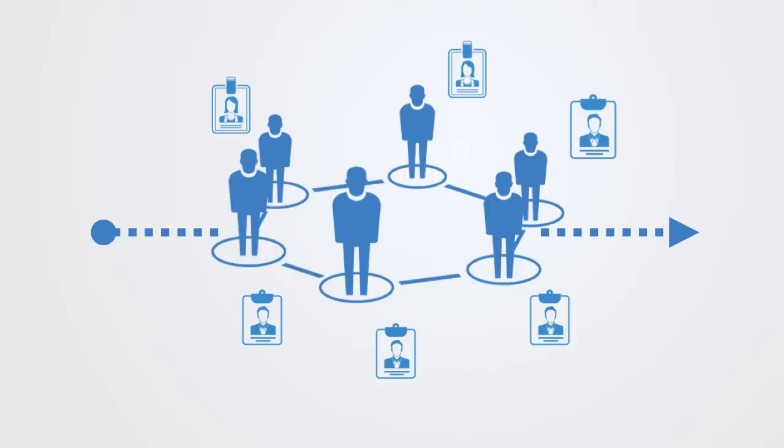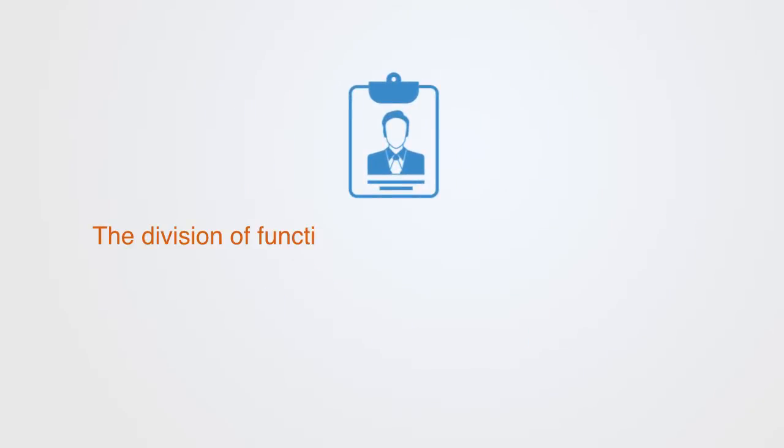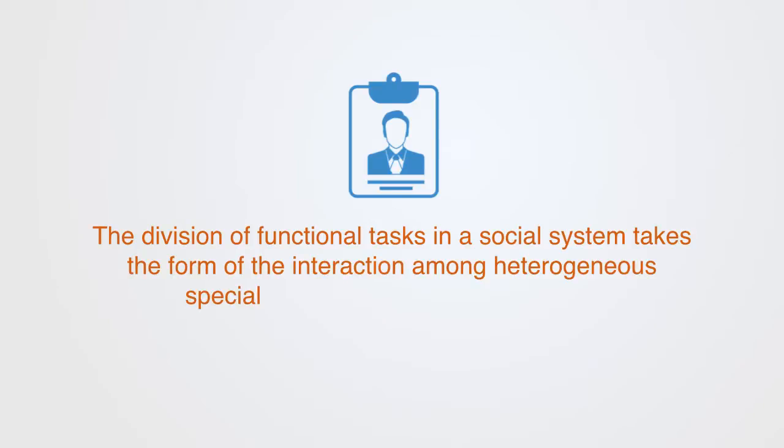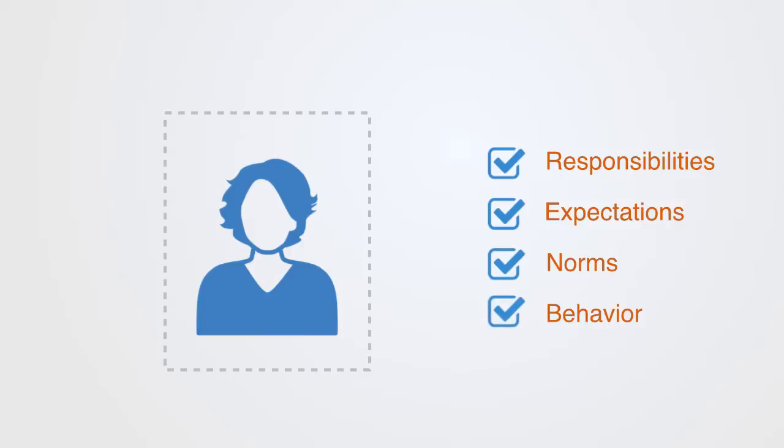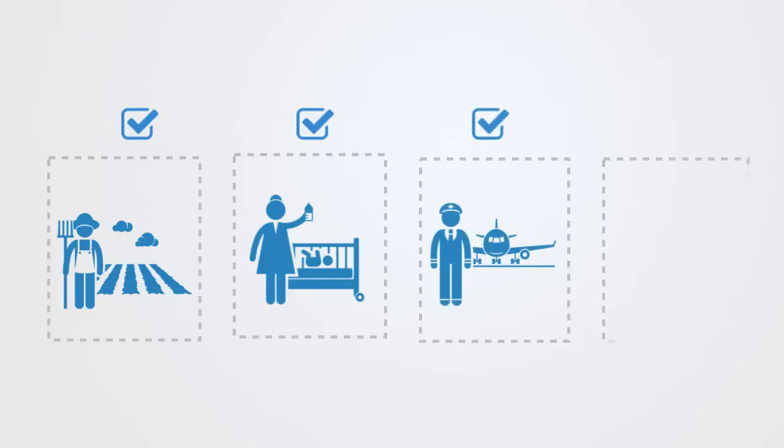The division of functional tasks within a society takes the form of the interaction among heterogeneous specialized positions that are called roles. A social role defines a set of behaviors and actions of someone who holds a particular social status. Roles such as mother, manager, or teacher constitute a set of responsibilities, expectations, norms, and behaviors that a person has to fulfill in order for the institution to function effectively. Roles define differentiated states that individuals must occupy in order for the organization to fulfill some collective function.